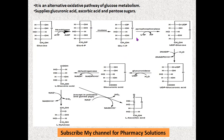This glucose-1-phosphate, in the presence of pyrophosphorylase, reacts with UTP — UDP is transferred to glucose-1-phosphate to form UDP-glucose. Two phosphates are removed from UTP as pyrophosphate, leaving UDP attached to glucose. So glucose-1-phosphate in the presence of pyrophosphorylase is converted to UDP-glucose.